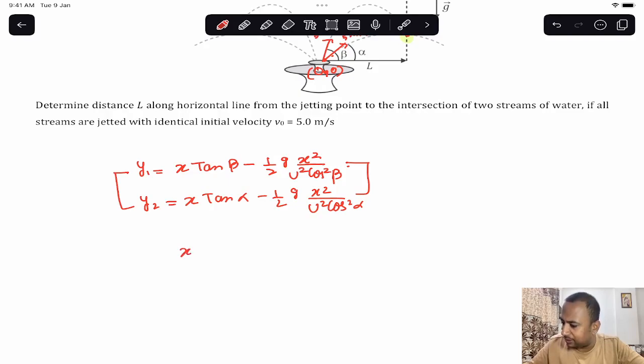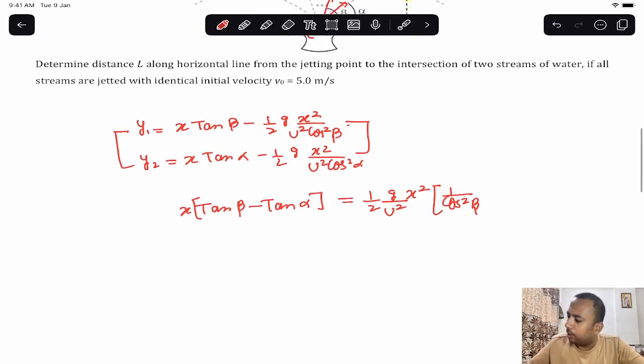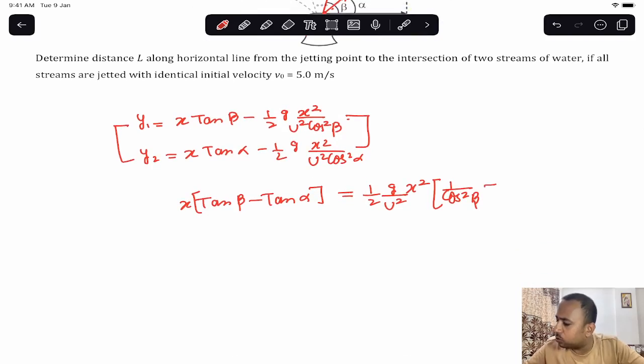From here we can write: x tan beta bracket minus tan alpha - you can see I've equated both and done all the calculations. So here I can write: half g by u squared x squared, and in the bracket will come - since we've equated both, what was on that side comes here - one upon cos squared beta minus one upon cos squared alpha.